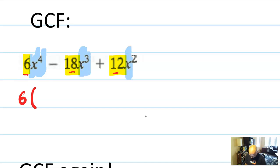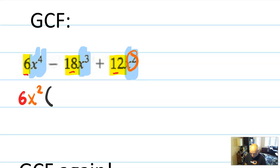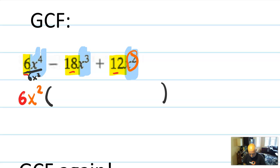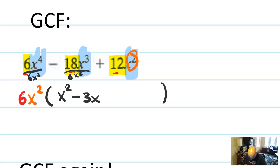Looking at the X terms, I have an X to the 4th, an X to the 3rd, and an X squared. The greatest common factor shared across X to the 4th, 3rd, and 2nd is X squared. So I'm going to write 6X squared factored out, and then figure out what goes inside. One way to think about this is you're dividing the original by the thing you factored out. If I take out a 6 and an X squared, I have an X squared left. If I take out 6X squared from 18X cubed, I get 3X. If I take out 6X squared from 12X squared, I get 2.